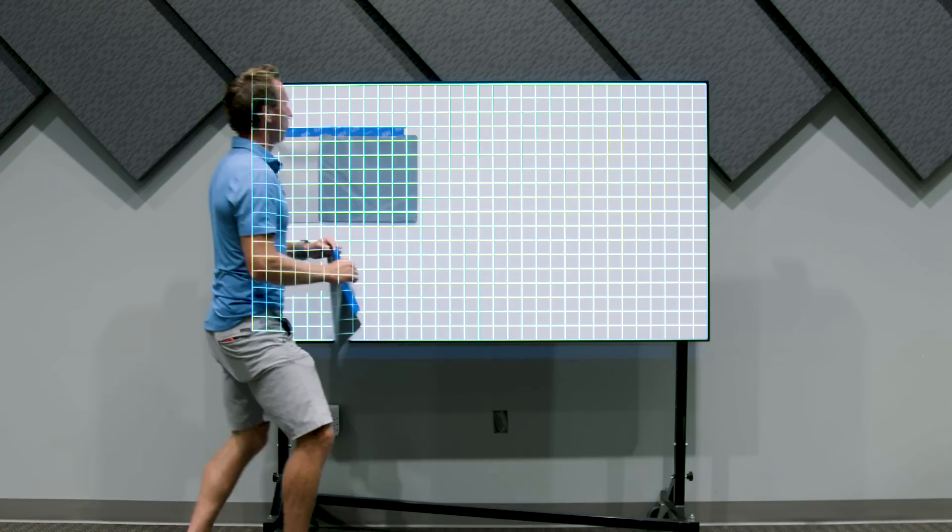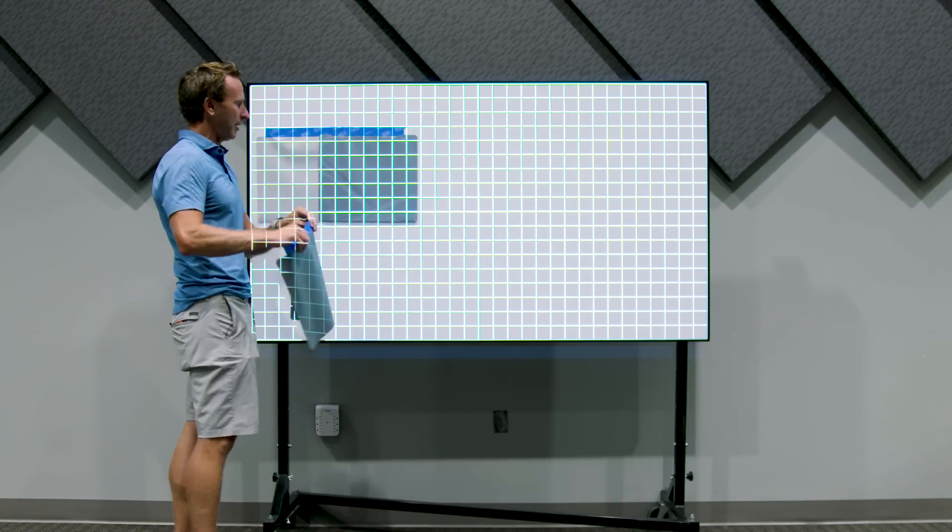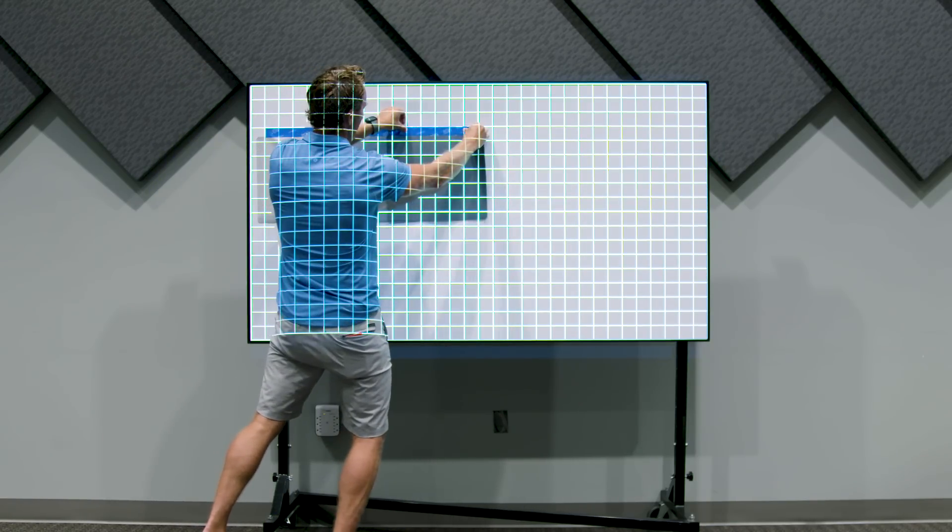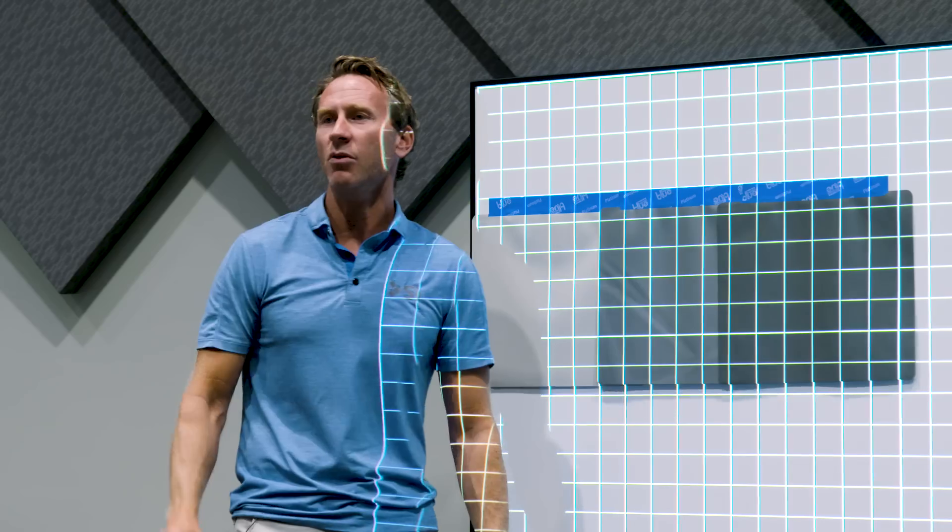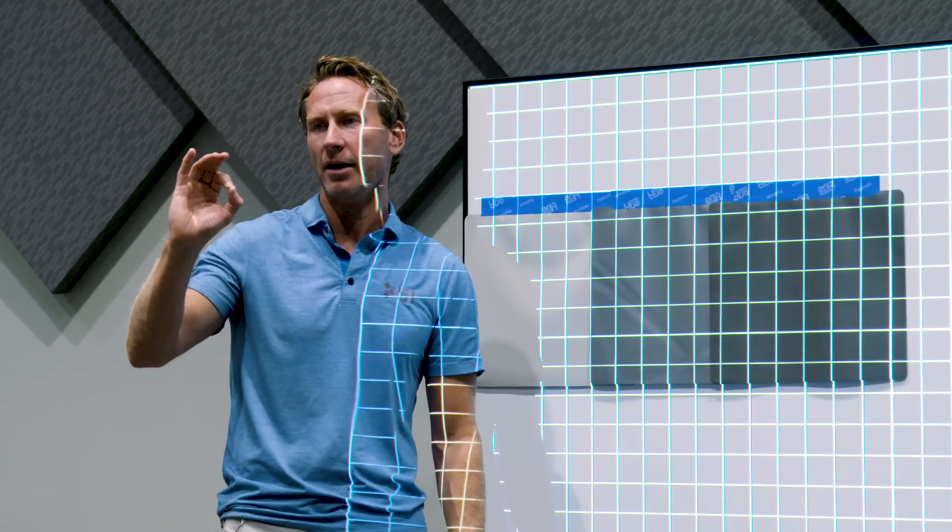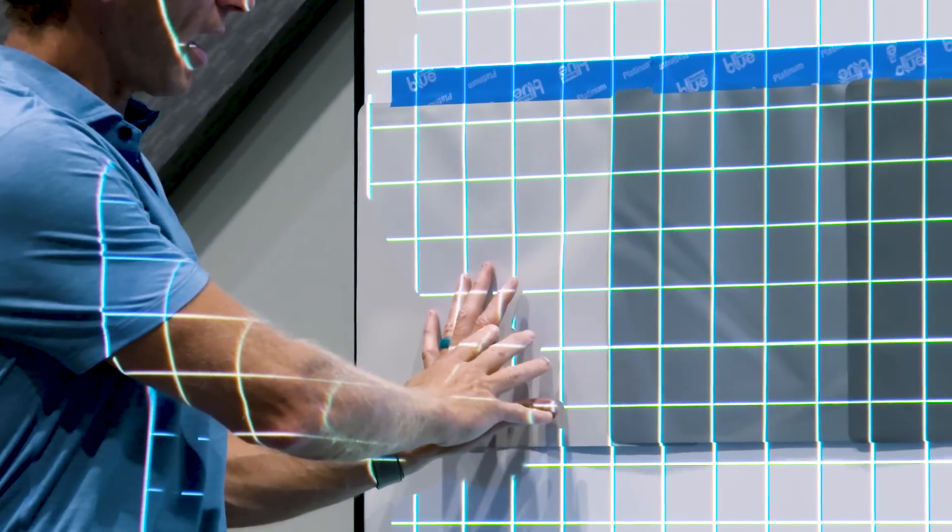A year after launching Slate 1.2 we developed Slate 0.8. Slate 0.8 gave us even more black level than Slate 1.2. We actually improved the black.